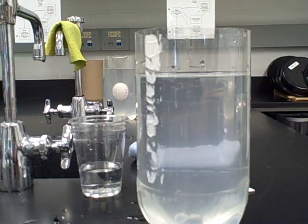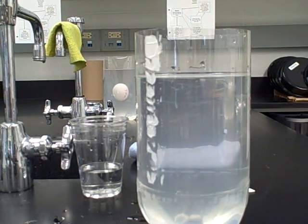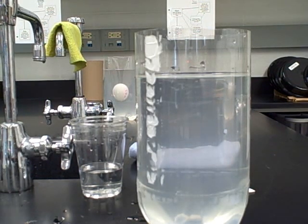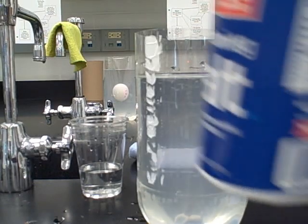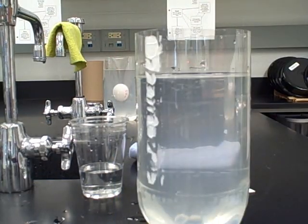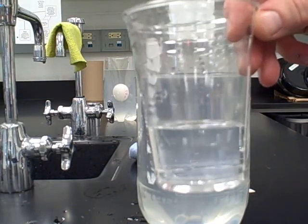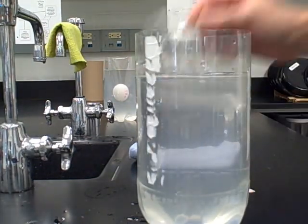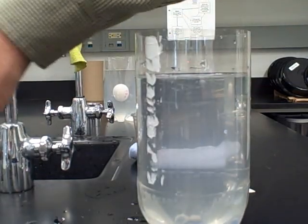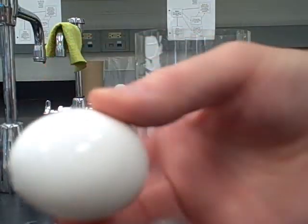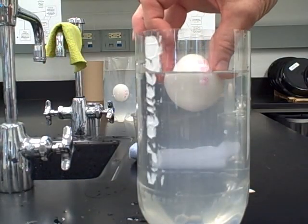So your job is to try to get the density of the water to be exactly the same as the density of the egg. We can increase the density of the water by adding salt. We can decrease the density of the water, make it less heavy, less dense, by adding water.